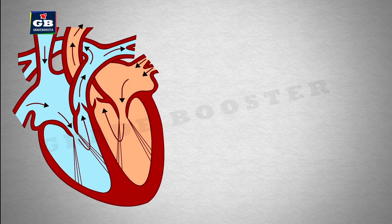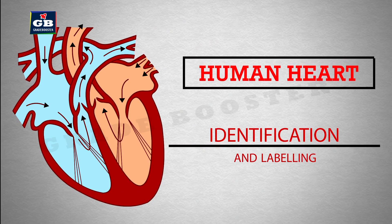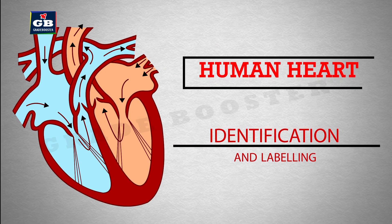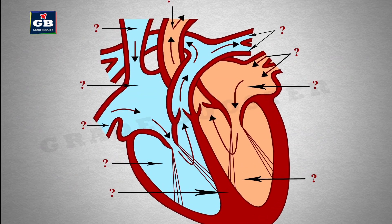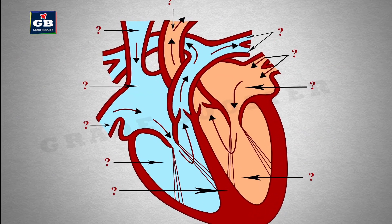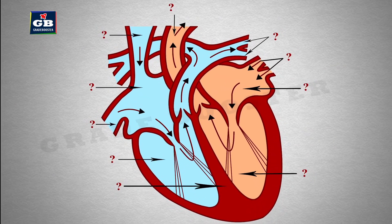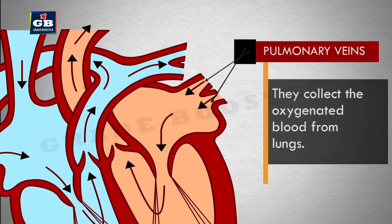Let us see the structure and functioning of different parts of the human heart. Along with identification and labeling, we will try to learn some important points about each part. Let's begin. These are pulmonary veins.